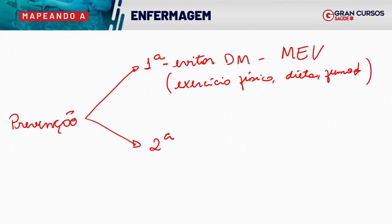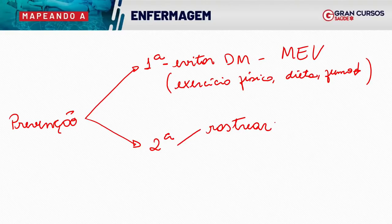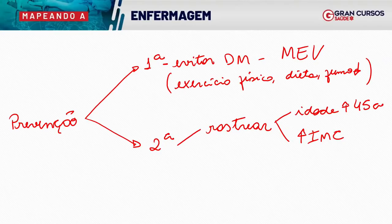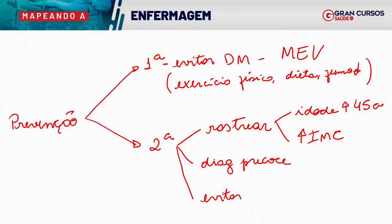Quando venho para a prevenção secundária, envolvo aqui o rastreamento — fazer uma análise dos exames dos pacientes que têm maior risco de diabetes. Principalmente em termos de idade, vamos rastrear: maiores que 45 anos, e menores de 45 anos que tenham IMC de sobrepeso maior que 25 ou obesidade, ou outras características de risco como familiares com diabetes. O objetivo é diagnosticar de forma precoce.